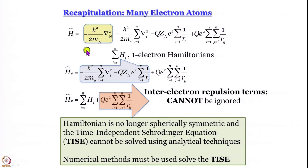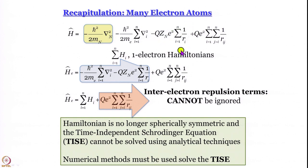We have learned that the way you write the Hamiltonian for a many-electron atom is that first you separate out the term for the kinetic energy of the nucleus or the center of mass. What you are left with is a sum of n kinetic energy terms, one for each electron, a sum of n nucleus-electron attraction terms (minus q_n e² summed over i to n of 1/r_i), and the problematic electron-electron repulsion term: plus q e² as a double summation of 1/r_ij terms.